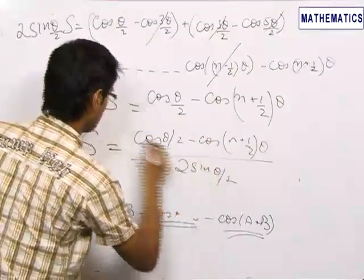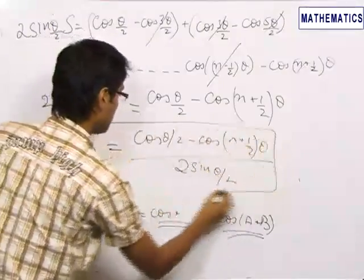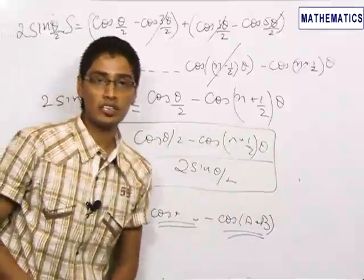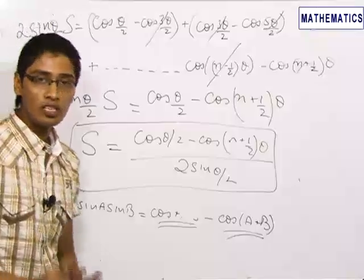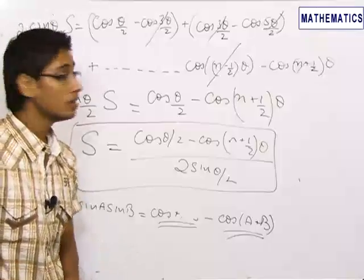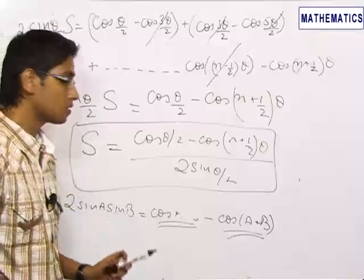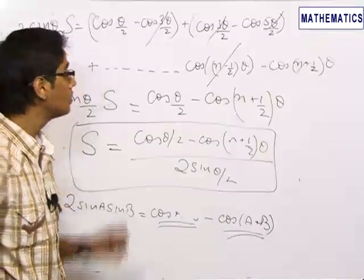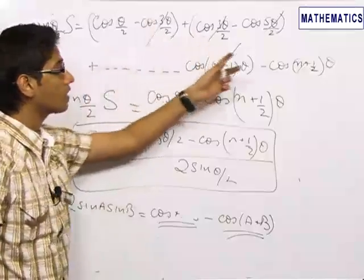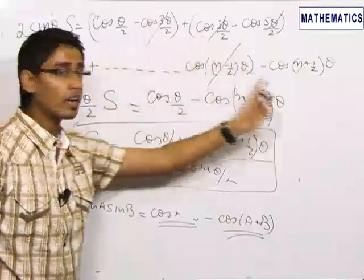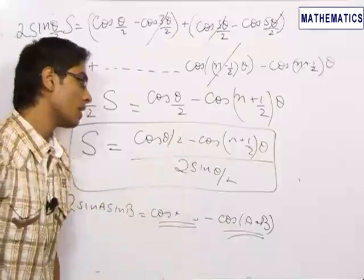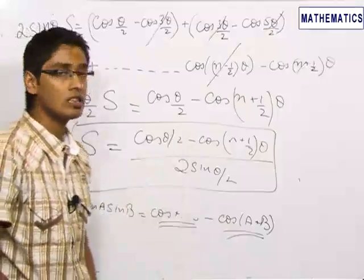To summarize, the important trick used in this problem is multiplying both sides by 2 times sin of half the difference of arguments. Here the difference of arguments was θ, so we multiply both sides by 2·sin(θ/2). In this process, all the intermediate terms cancel out except the first and last terms, giving the final answer as [cos(θ/2) − cos((n + ½)θ)] / (2·sin(θ/2)).